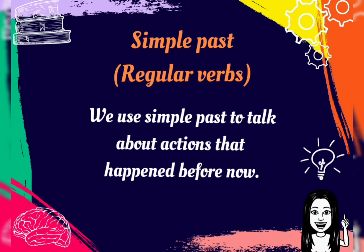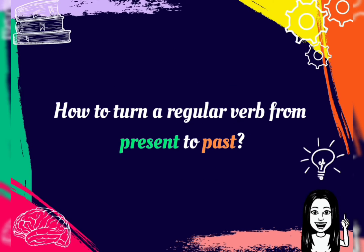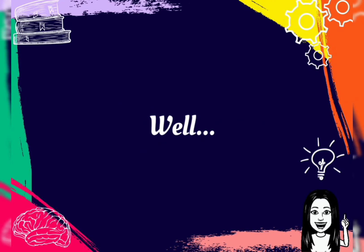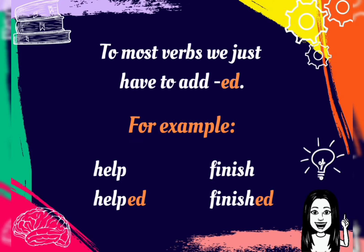We use simple past to talk about actions that happened before now. How to turn a regular verb from present to past. Well, to most verbs we just have to add "-ed". For example, help — helped, finish — finished.